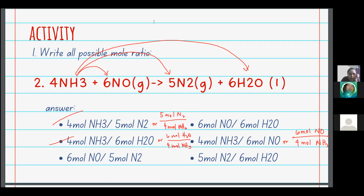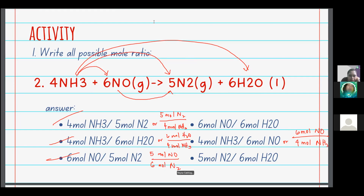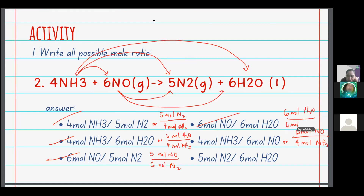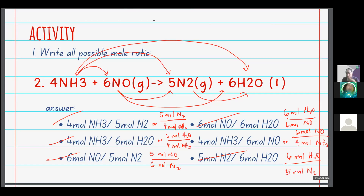Also: 6 moles of nitrogen monoxide to 5 moles of N2, and its reciprocal. Then 6 moles of NO is to 6 moles of water — this is correct, and you can reverse it as well. Lastly, product and product: 5 moles of nitrogen is to 6 moles of water, and its reciprocal, 6 moles of water is to 5 moles of N2. In total there should be 12 possible mole ratios.